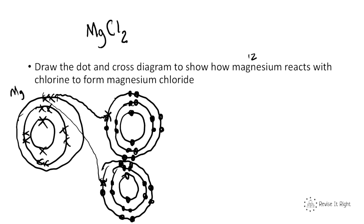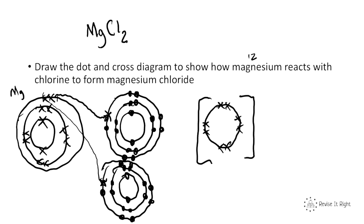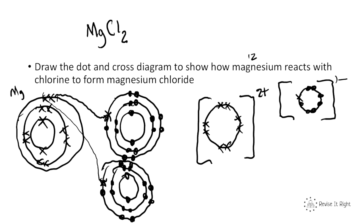So how do we represent these as ionic bonds? We draw the ions. Magnesium has lost 2 electrons, so we draw its next outer shell with 8 electrons — it's now a 2+ ion. Then we draw each chlorine: 7 of its own electrons, plus 1 dot received from magnesium, making each chlorine a 1− ion.